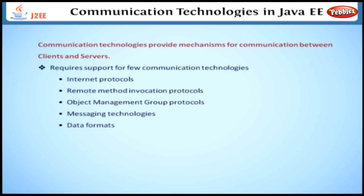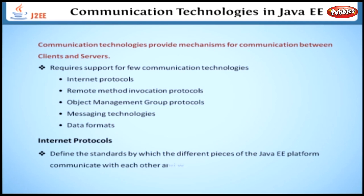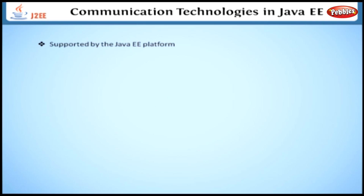The first one is internet protocols. Internet protocols define the standards by which the different pieces of the Java EE platform communicate with each other and with remote bodies. The internet protocols supported by the Java EE platform are TCP, IP, HTTP, and SSL.